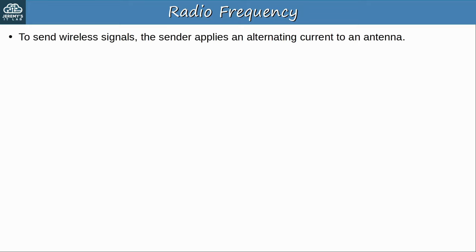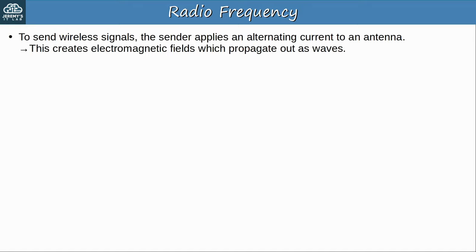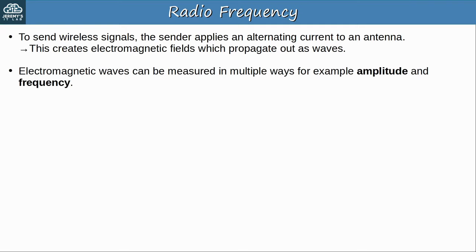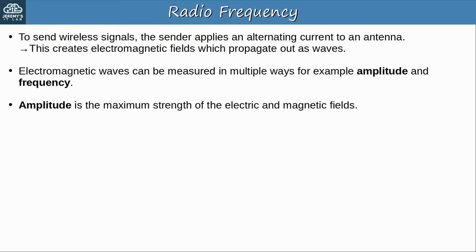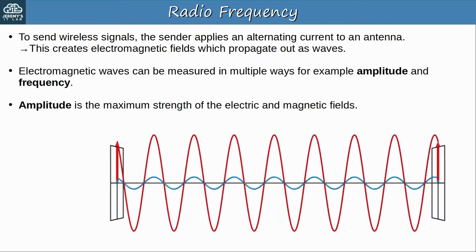Now let's talk about radio frequency and electromagnetic waves in general. To send wireless signals, the sender applies an alternating current to an antenna, which creates electromagnetic fields that propagate out as waves. Electromagnetic waves can be measured in multiple ways, for example amplitude and frequency. Amplitude is the maximum strength of the electric and magnetic fields. For example, a red wave with higher amplitude and a blue wave with lower amplitude can have the same frequency.